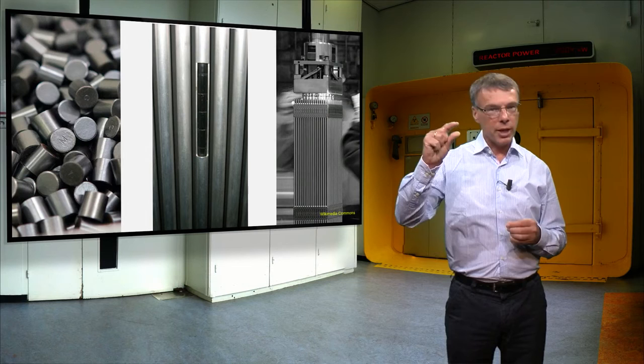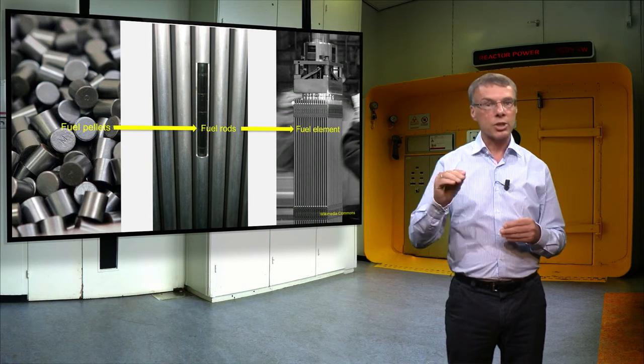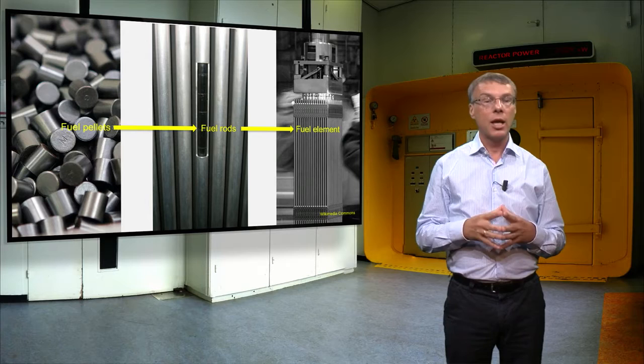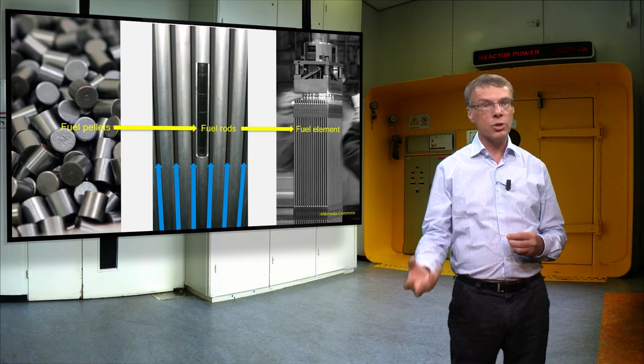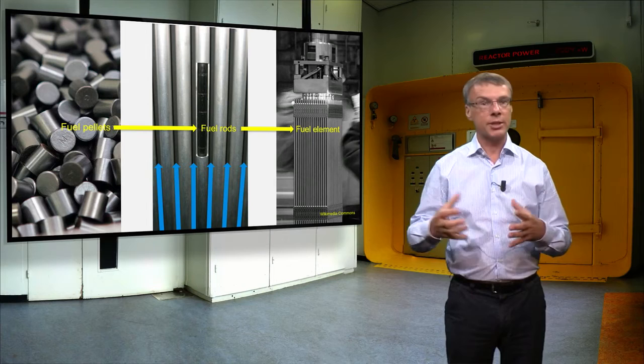Here you see how the fuel looks like. Small fuel pellets with a height of about 10 mm and diameter of 8 mm are stacked upon each other in a gas-tight fuel cladding. See the middle figure. The fuel rods are assembled together into fuel elements. Water flows through the space between the fuel rods to moderate the neutrons and to take away the heat.